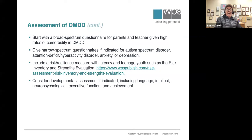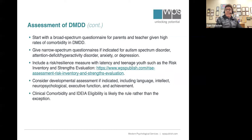Does every child assessed for DMDD require a full neuropsychological evaluation? At our center, every kid has a full evaluation. I think it's more likely you'll want to know the child's level of language, intellect, neuropsychological and executive functioning. DMDD is turning out to be a very chronic, severe condition that will adversely affect children well into their adult years. Clinical comorbidity is the rule rather than the exception. My feeling is that at some point we will accept that you can have a co-diagnosis of ODD or possibly intermittent explosive disorder alongside DMDD.